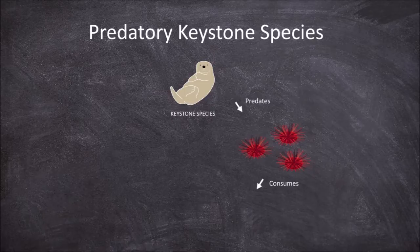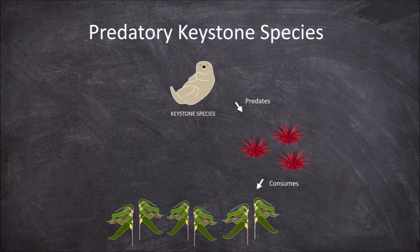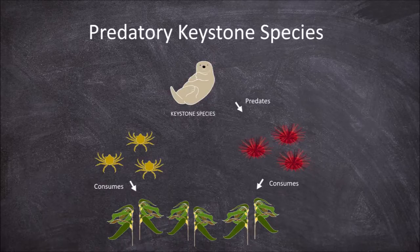Sea urchins feed heavily on sea kelp, the sea kelp providing a habitat for a diverse range of other species. Their predation on the sea urchins keeps this community in balance.